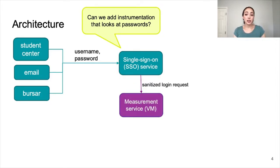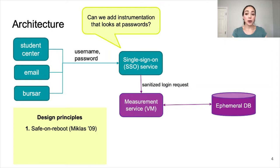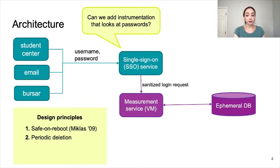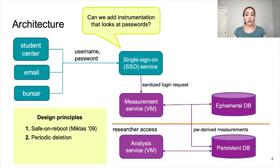We start with a VM that receives the sanitized login request from the SSO service, including the username, password, and headers. We adopt the safe on reboot principle introduced in Bunker by Miklas et al., ensuring that passwords are never stored in plain text on disk, so rebooting will clear all sensitive data. In order to compare password-derived information across multiple requests, we need some form of temporary storage. For this, we use an ephemeral MySQL database, and we encrypt the fields stored in this database with an in-memory key that expires every 24 hours. By doing this, we achieve periodic deletion, which is the second of our design principles. We then record the password-derived measurements to a persistent database accessible to the researchers, and use an analysis service to perform further analysis. We restrict access to the measurement service and ephemeral database to a subset of researchers responsible for maintaining the service, and thus we achieve least privilege access, our third design principle.